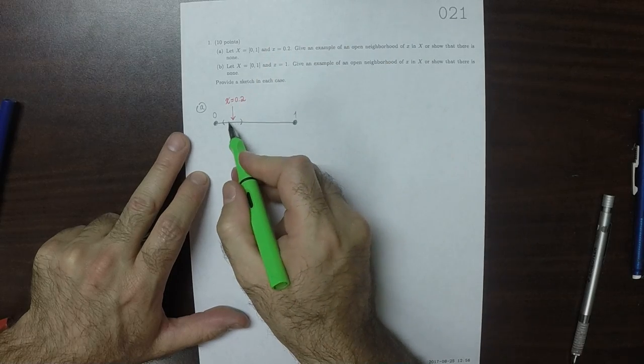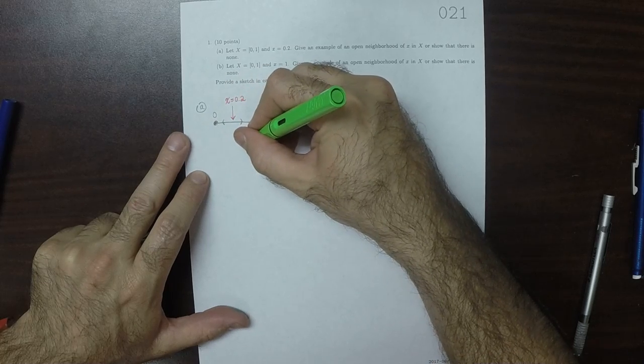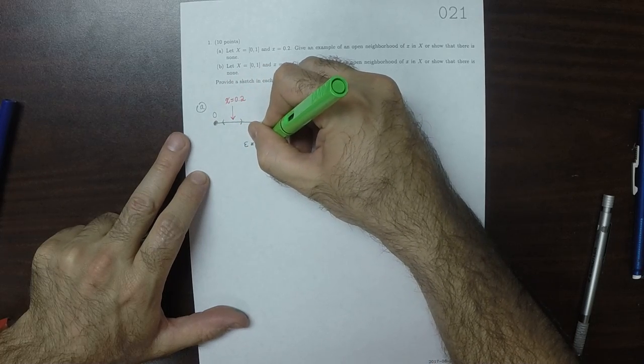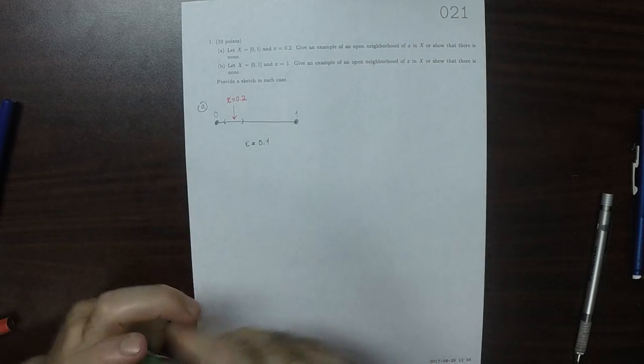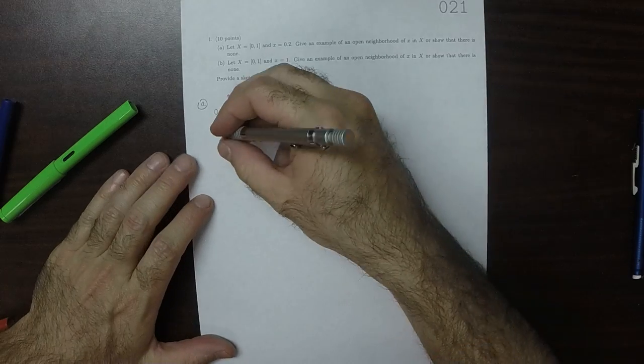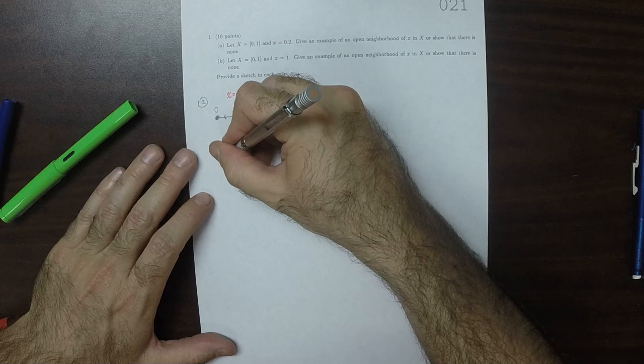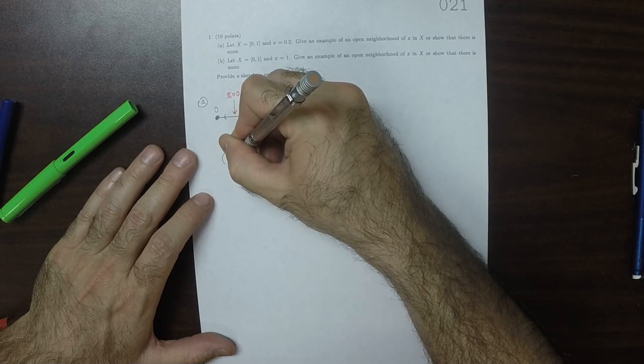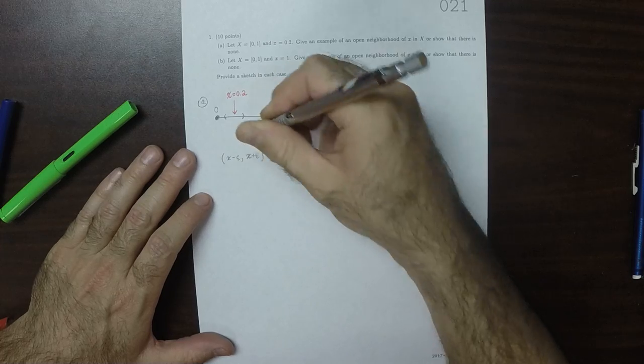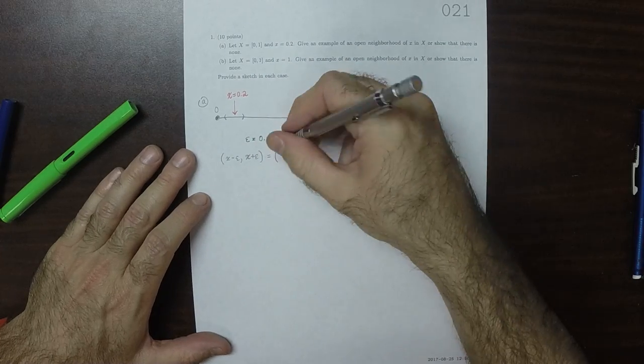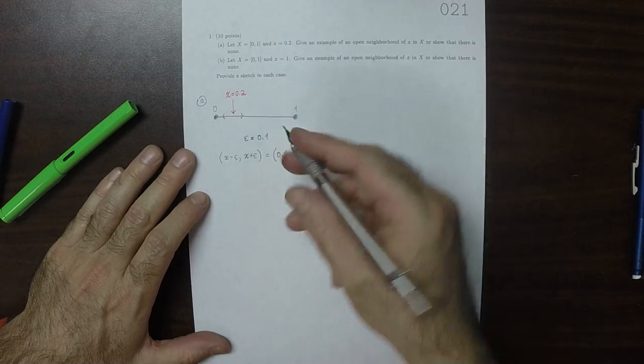So let's say that we go to, we let epsilon be 0.1. So that would mean that the set x minus epsilon to x plus epsilon would be the set 0.1 to 0.3.